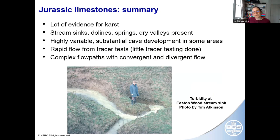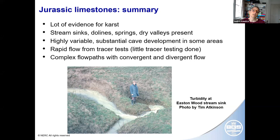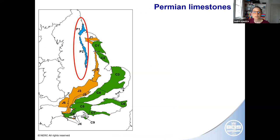To summarise the Jurassic limestones: there's lots of evidence for karst. Cave development is quite variable — substantial in some areas and none in others. There hasn't been much tracer testing done, but where it has been done it's shown very rapid flow and quite complex flow paths with both convergent and divergent flow. This picture of Eastwell stream sink illustrates why springs and abstraction boreholes connected to stream sinks can have high turbidity.